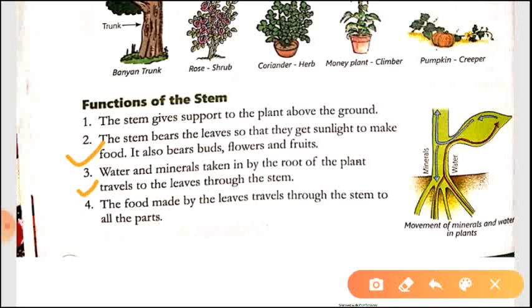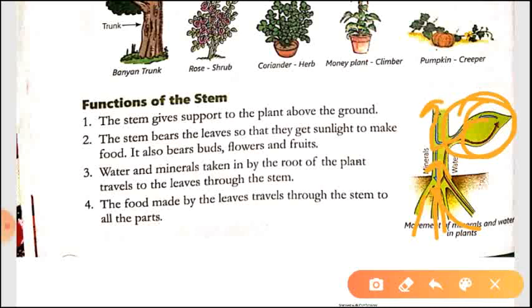Water and minerals taken in by the roots of the plant travel to the leaves through the stem. Whatever minerals and water the roots absorb, they pass them to the stem, and the stem's job is to transport water and minerals to every part of the plant. Similarly, the stem transports food made in the leaves to the entire plant. So the stem transports not only food but water and minerals also from one part to another.